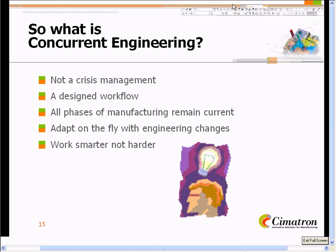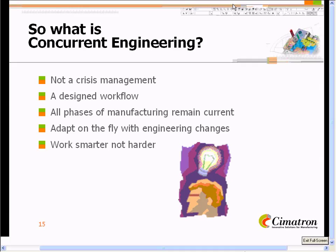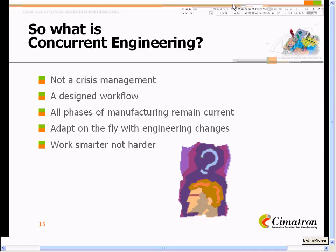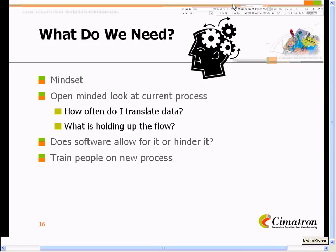What really is concurrent engineering? It's not meant to be just a crisis management philosophy. What it is is a designed workflow from beginning to end, from quote to delivery. All phases of manufacturing are intended to remain current so that everyone knows exactly where the design is at, how much is available to be worked with, and what the current release level is that everyone is working to. As an engineering change comes along, concurrent engineering allows the ability to adapt on the fly — it's not like all things come to a screeching halt. The thought is to work smarter and not harder.